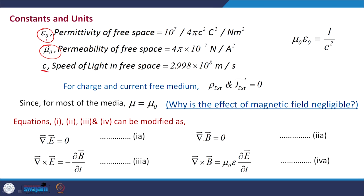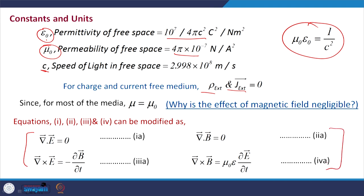If you multiply epsilon_0 and mu_0, the 4-pi terms cancel out, 10 to the power 7 cancels out, and you are left with 1 by c squared. Suppose I take a medium where J_external and rho_external are 0. Then we can rewrite Maxwell's equations assuming mu is essentially equal to mu_0, because most optical materials are more responsive to the electric field than to the magnetic field. So mu is almost equal to mu_0.